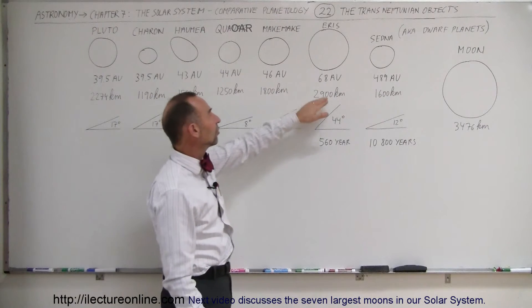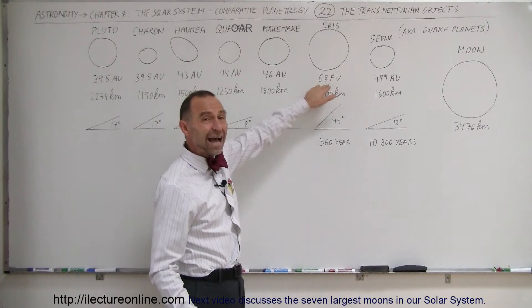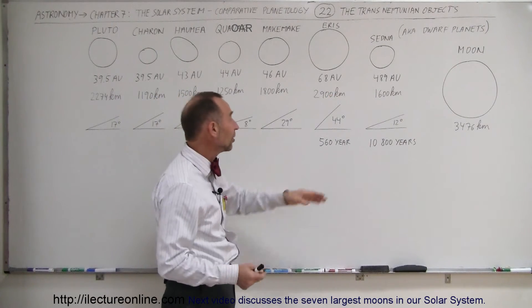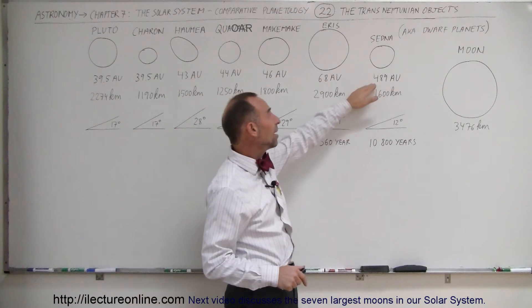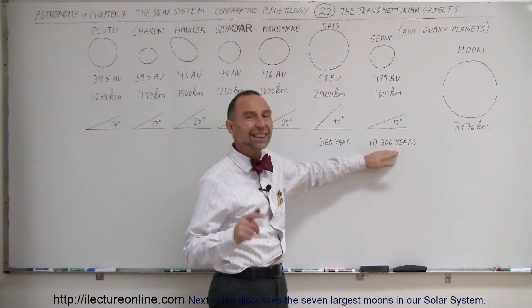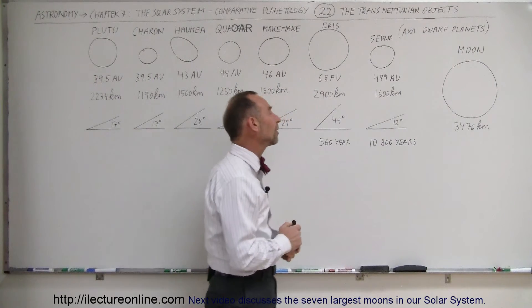Notice that Eris is so far away, 68 times the distance between the Earth and the sun, that it takes Eris about 560 years to make one trip around the sun. And Sedna, being that far away, takes more than 10,000 years to make one trip around the sun.